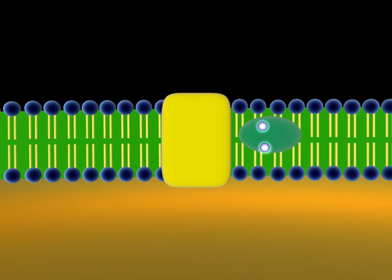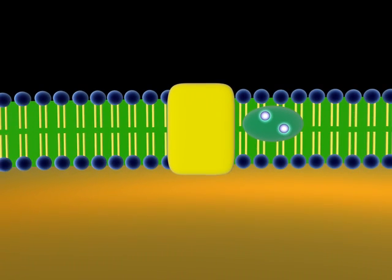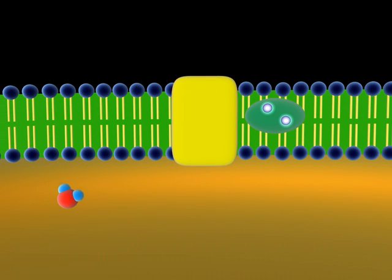However, unlike photosystem I, photosystem II is able to replenish its own lost electrons through the process of photolysis. A water molecule is broken down into oxygen, hydrogen ions, and electrons. The waste gas of oxygen ends up being the oxygen we breathe.